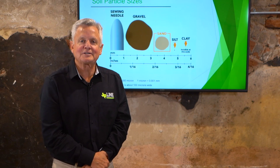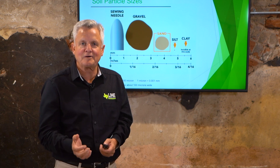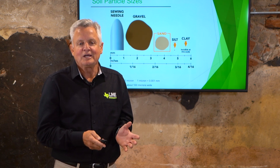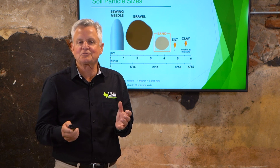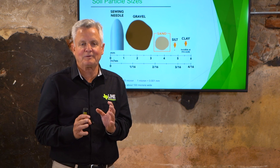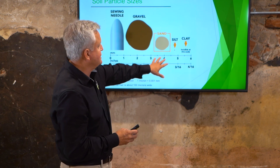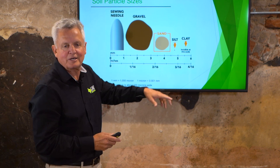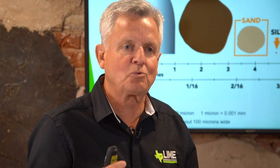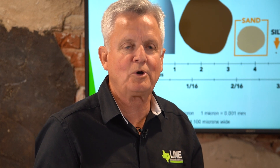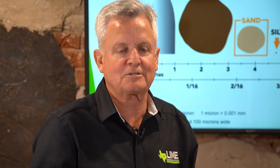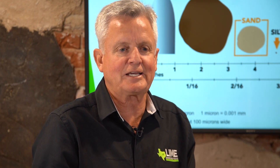I want to start off by talking about soil particle size and the common types of soils we have in Texas: gravel, sand, silt, and clay. Sand is about one millimeter in width. To give you an idea, there are 25.4 millimeters in one inch, so the sand particle is about the same size as the width of a sewing needle — that's about the smallest sand gets.